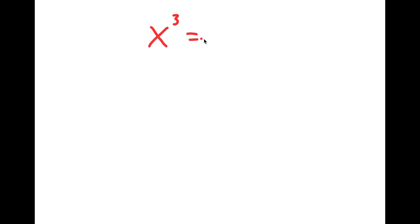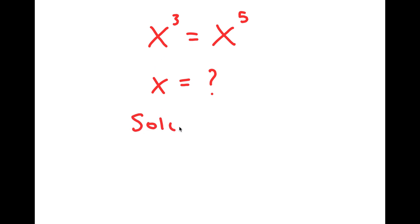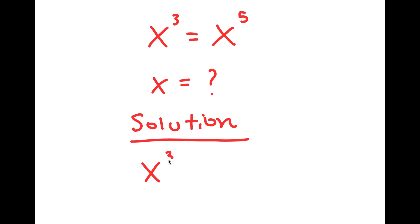In this video, I'm going to be solving the equation x to the power of 3 is equal to x to the power of 5. My only variable in this equation is x, so that's what I'm going to be solving for. For my solution, I'm going to rewrite my equation down here so I have a little more solving space. So my equation: x to the power of 3 is equal to x to the power of 5.